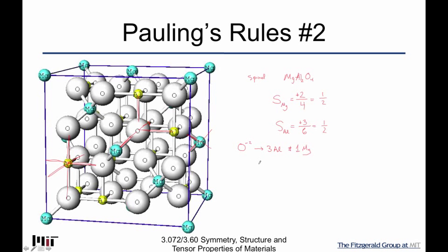So if we take SMG times 1 plus SAL times 3, that better equal the QO2, which is 2. So we substitute in 1 times 1 half plus 1 half times 3, which equals 2, and all is good.